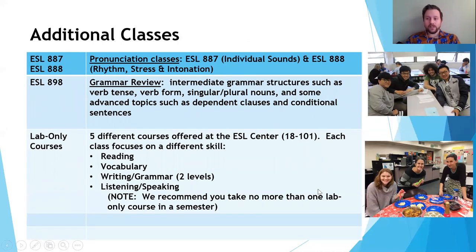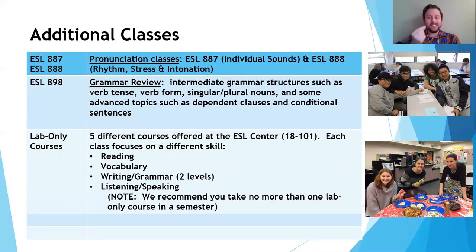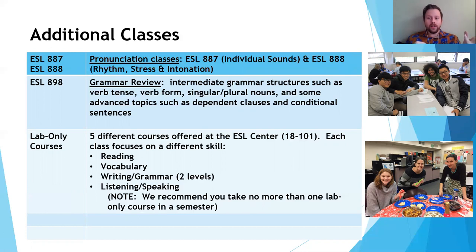We also offer classes in other skills outside of grammar and writing, reading and vocabulary, and listening and speaking. We offer two pronunciation classes, ESL 887 and ESL 888. ESL 887 focuses on the individual sounds of English — you practice vowel sounds and consonant sounds, and it teaches you the correct mouth position and the correct way to vocalize the individual sounds. ESL 888 is about rhythm, stress, and intonation — putting sounds together, the rhythm and stress of English, and when to raise or lower your voice. We offer these two classes, usually one or sometimes both, every semester, and you can choose one, the other, or take both in one year.